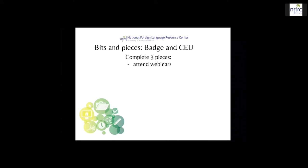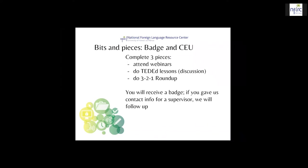In order to earn the badge, you're going to complete three things: attend these webinars; go through the TED-Ed lessons and participate in the discussion thread by posting comments using text; and submit the 3-2-1 Roundup reflection document at the end. If you do all these things, you will receive a badge. If you're interested in continuing education units in your own school system and you gave us contact information for a supervisor, we will follow up with that supervising person. If you are a North Carolina Virtual Public School teacher, this is already taken care of — we're already in contact with Ellen Hart and will get the continuing education units to you.